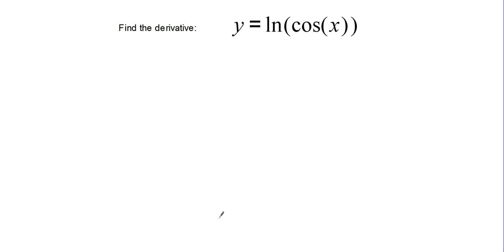In this case, we'll need to write this as the natural log of u, with u equal to cosine of x. So we have y equals ln u, with u equal to cosine x, and we'll take the derivative of both sides.